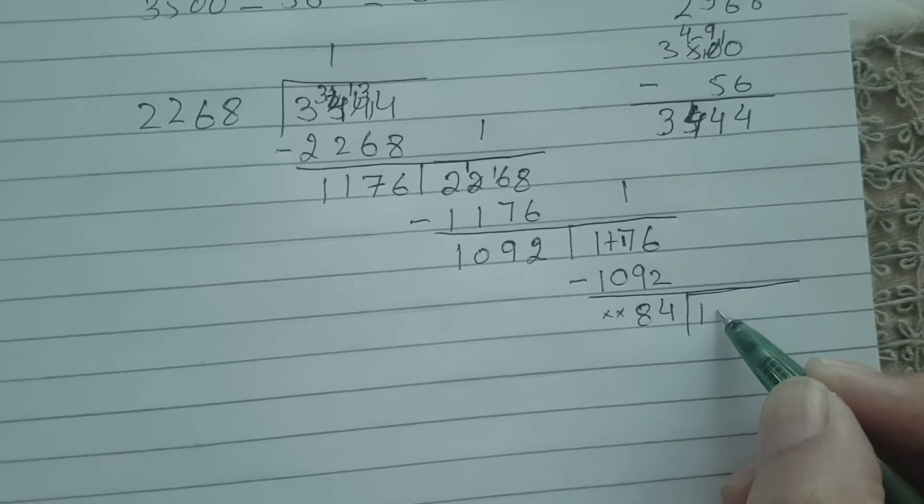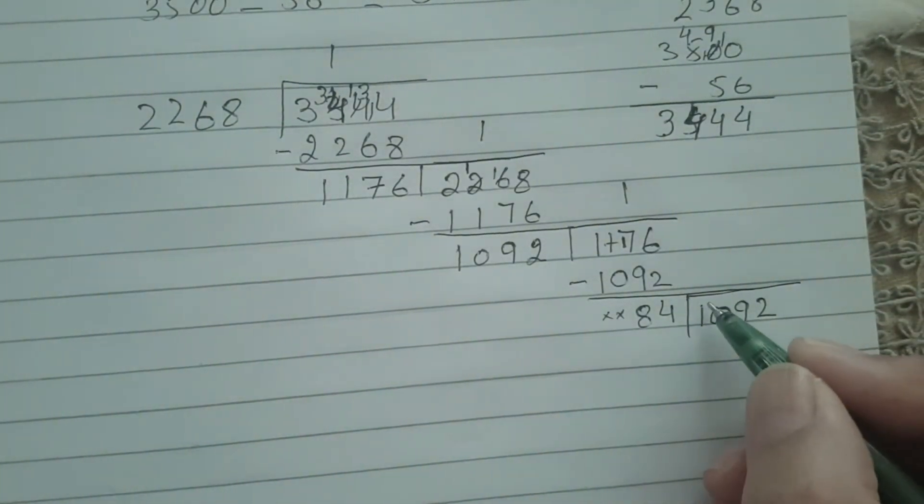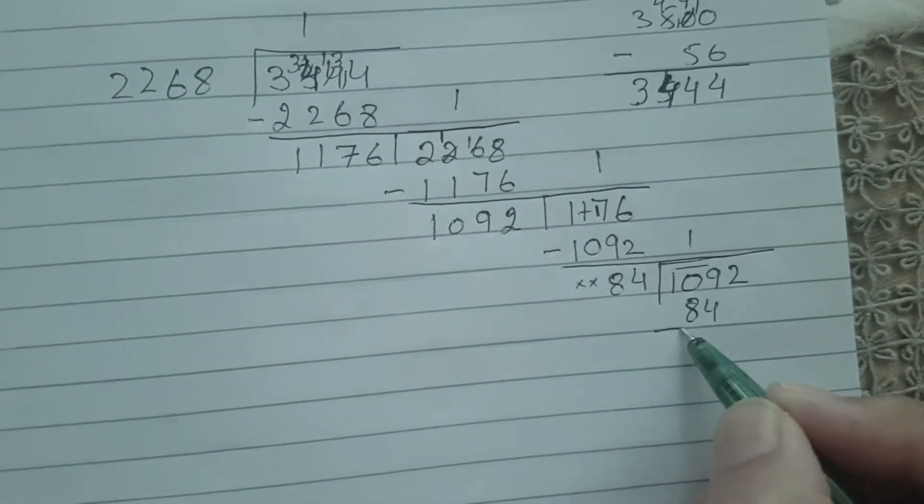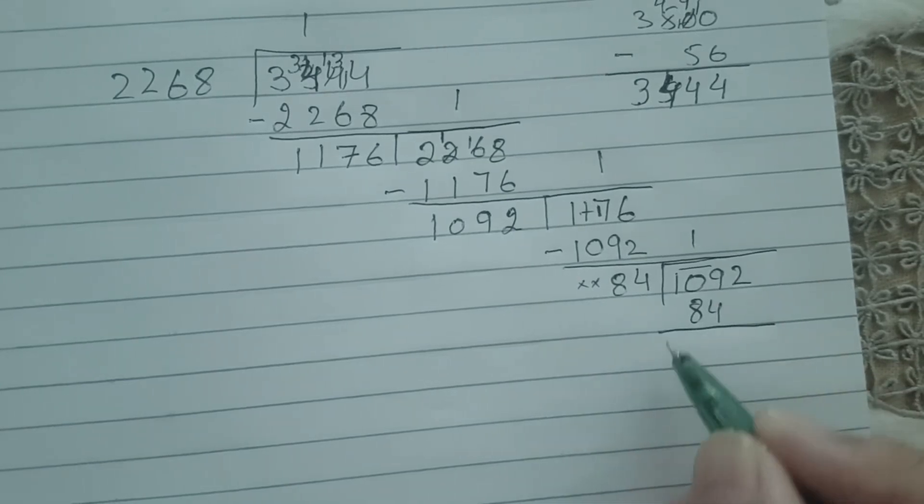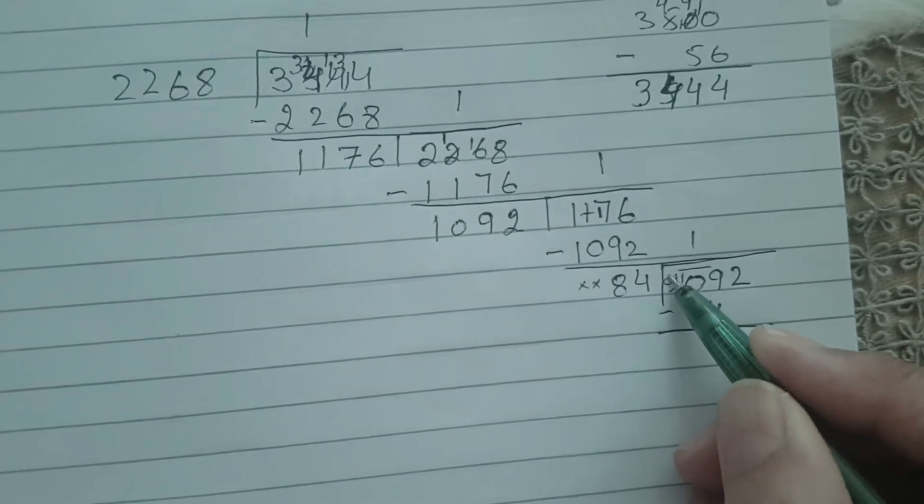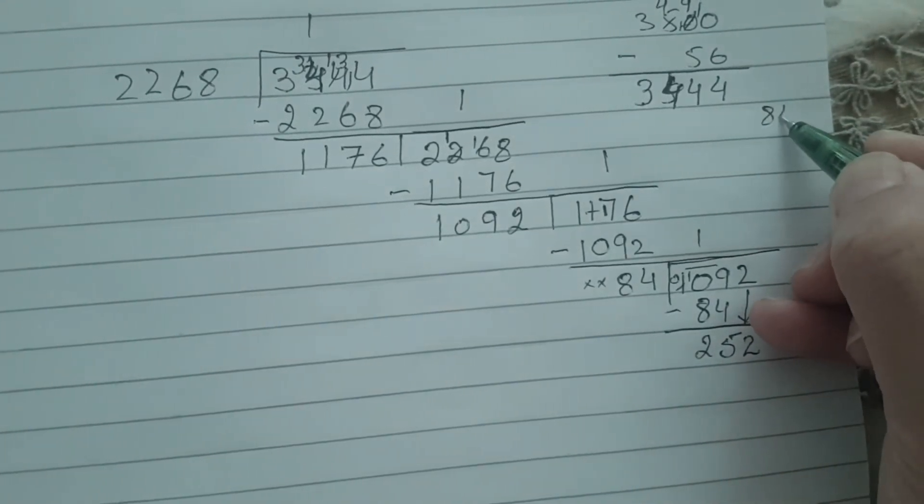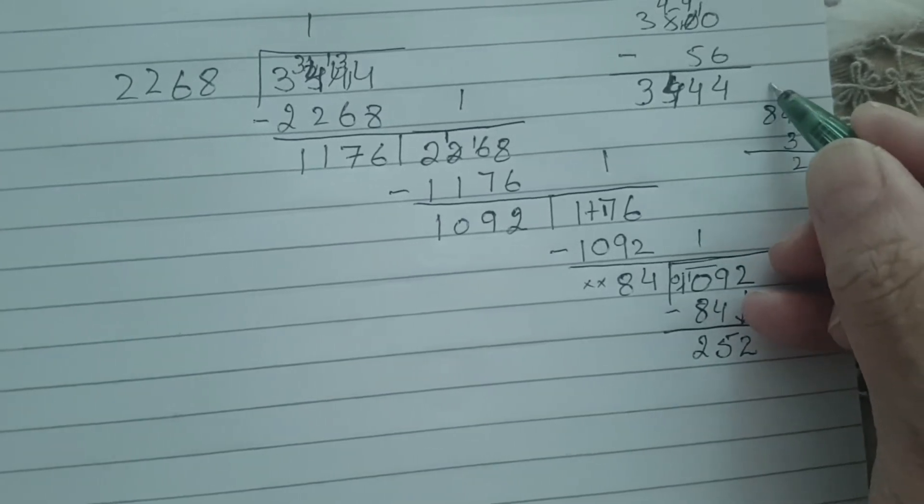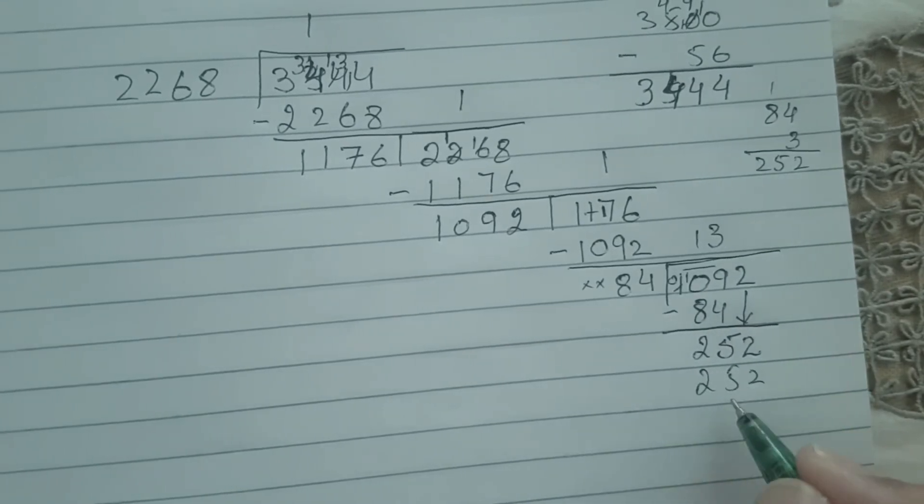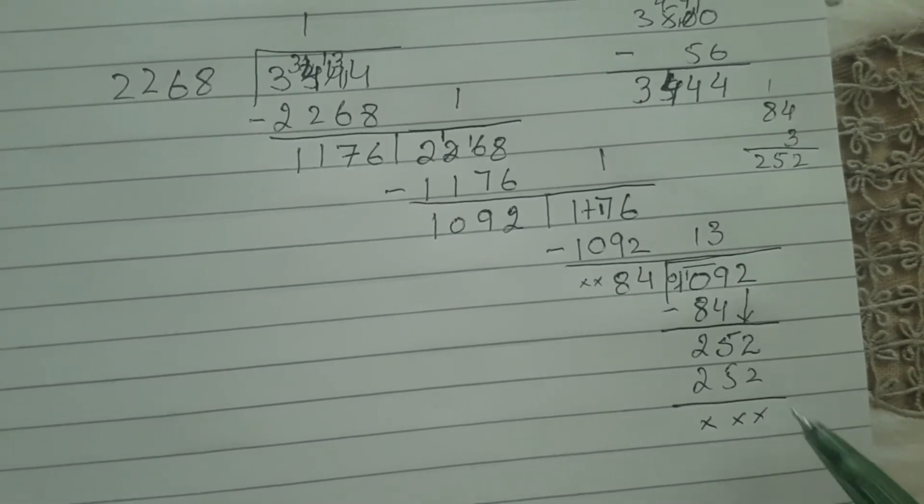The last dividend is 1092. 84 is greater than 109 so you will divide it twice. 84 one time, out of 109 subtract 84. 9 minus 4 is 5, 10 minus 8 is 2. Bring 2 down. 84 three times is 252. Your number is now exactly divided by 84 and we are left with 0.